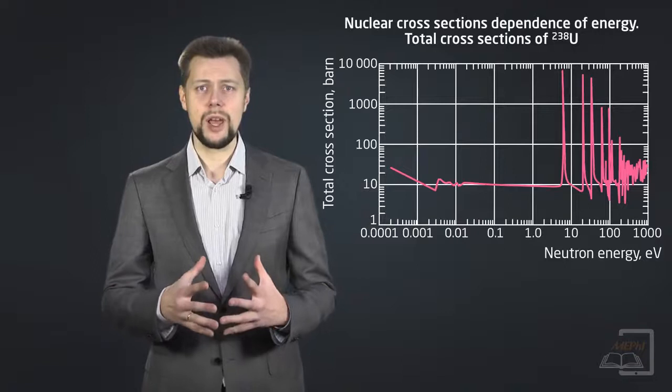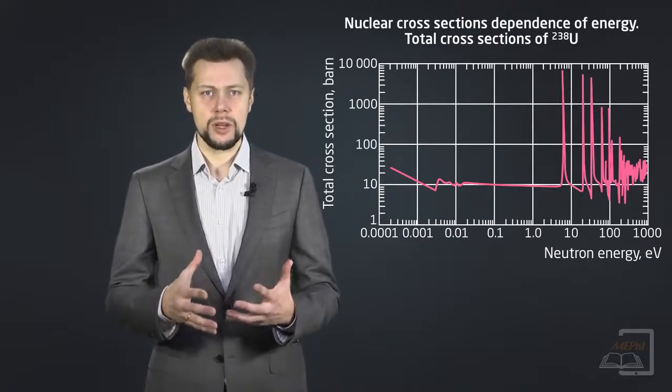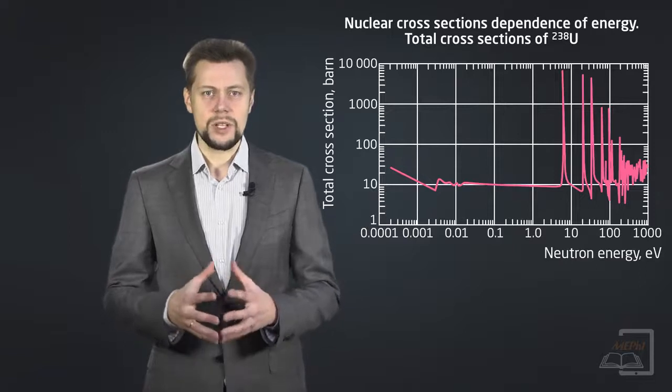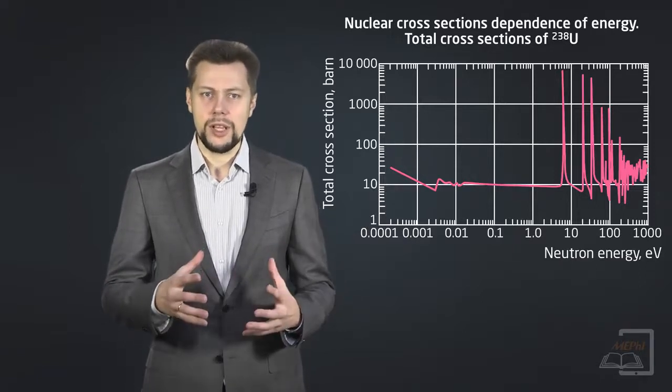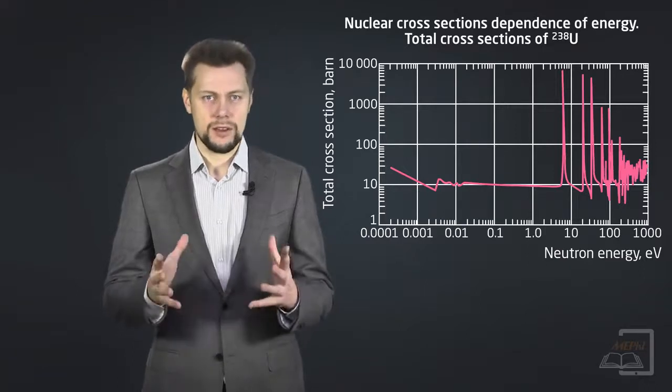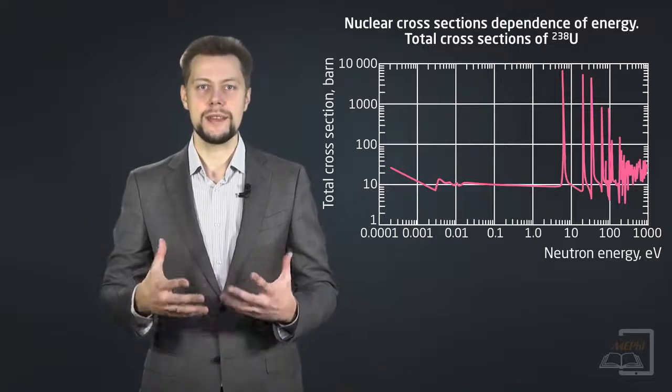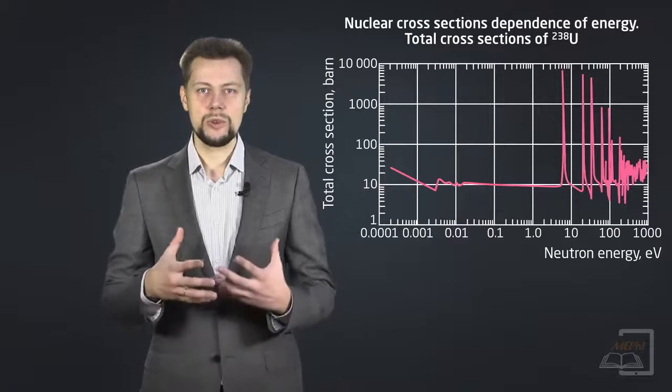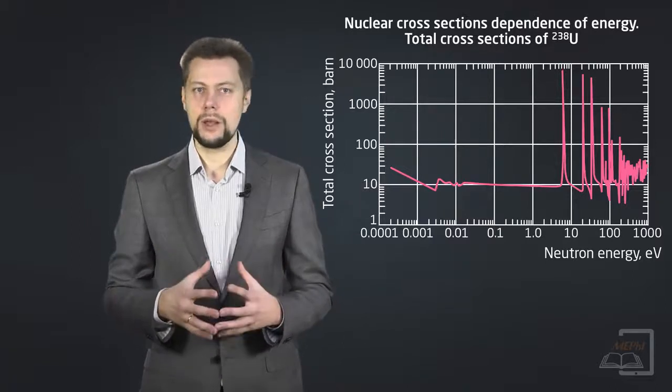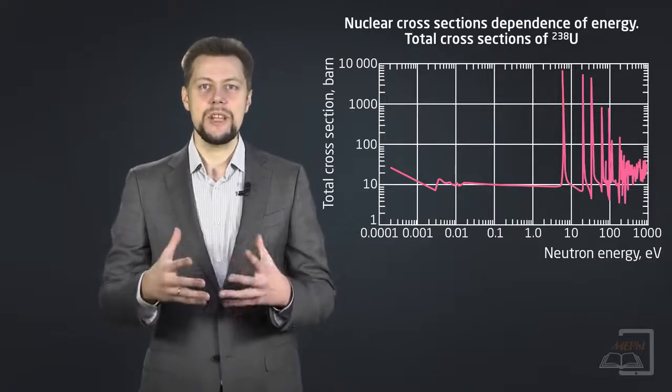I have to mention that the process of interaction of neutrons with a nucleus depends on the energy of a neutron. Dependence of microscopic cross-section, the quantitative characteristic of probability of a nuclear reaction, on energy carries a difficult character. For a large number of isotopes, especially those whose mass number exceeds 100, the examination of the absorption cross-section variation, depending on the neutron energy, reveals the existence of three main regions.